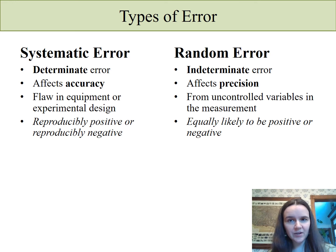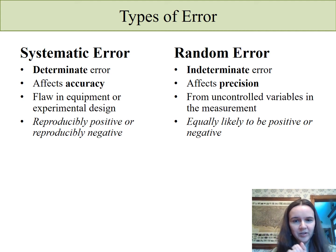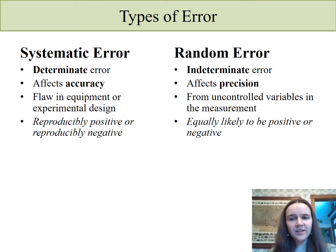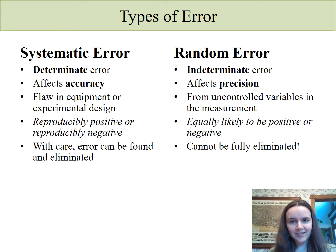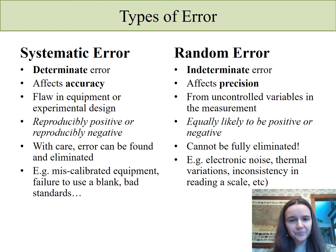The thing that helps you identify systematic error is that it is going to be reproducibly in one direction — every time you do it, it'll be offset a little bit; it's always going to be a little bit high, or every time it'll be a little bit low. But it's reproducibly wrong in the same direction. That's systematic error, and that affects accuracy. Random error is equally likely to be positive or negative, so these tend to cancel each other out a little bit over time. You cannot fully eliminate random error — you always have some. Systematic error, if you're lucky and careful, you can find what's causing it and eliminate the cause, meaning you can have an accurate measurement. Miscalibrated equipment is a really common way to get systematic error.